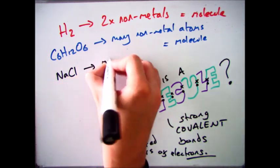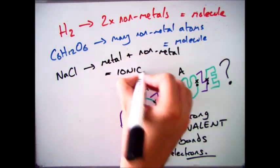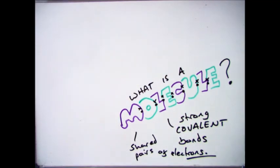However, when you get something like NaCl, where we've got a metal and a non-metal, it's no longer a molecule, it becomes an ionic lattice.